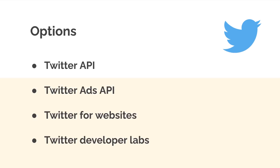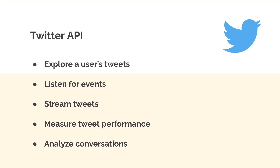There are other options beyond just the Twitter API. There's the Twitter Ads API, Twitter for Websites, and Twitter Developer Labs if you want to do work on the API itself to help improve it. With the Twitter API, you can explore a user's tweets, fetch their latest tweet, listen for events, stream tweets in real time, measure tweet performance, analyze conversations, and more.